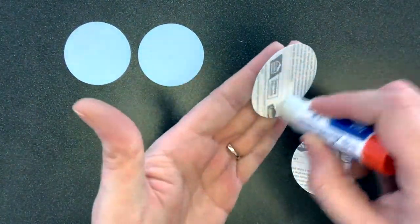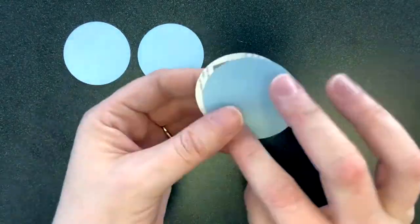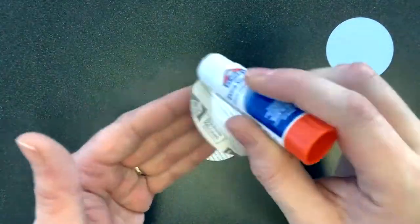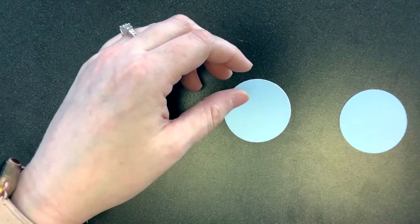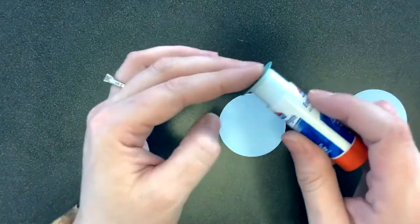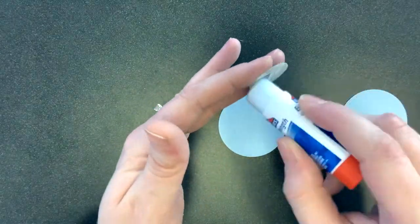Once all of your circles are ready, glue the larger ones together. Now simply glue the smaller circles on top.